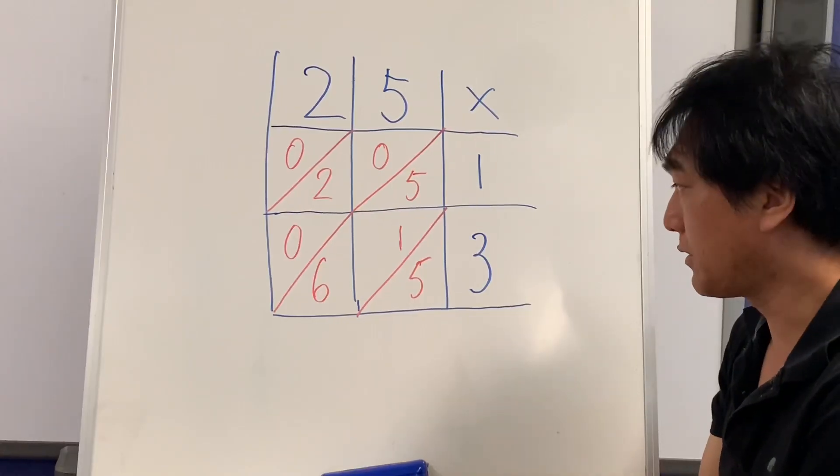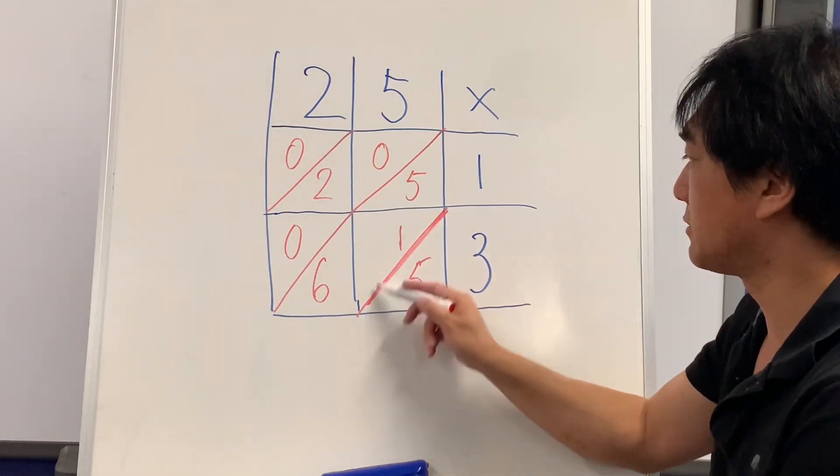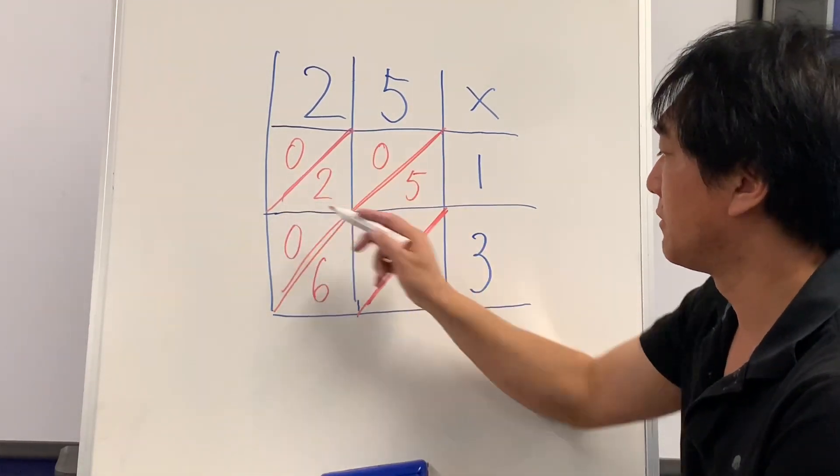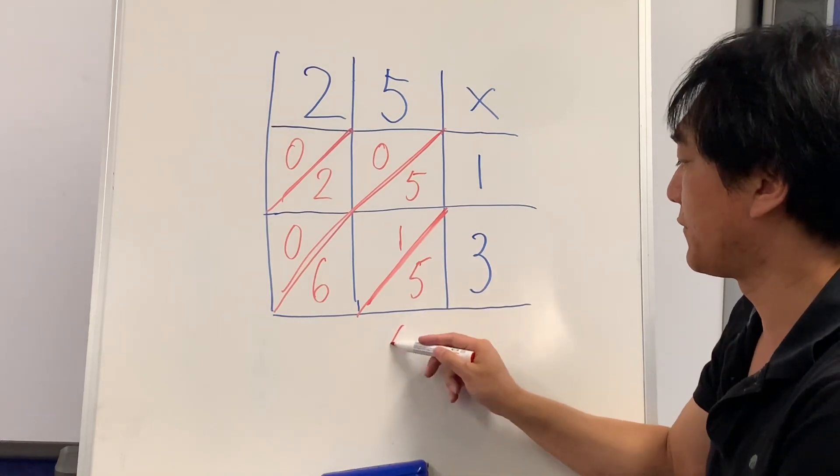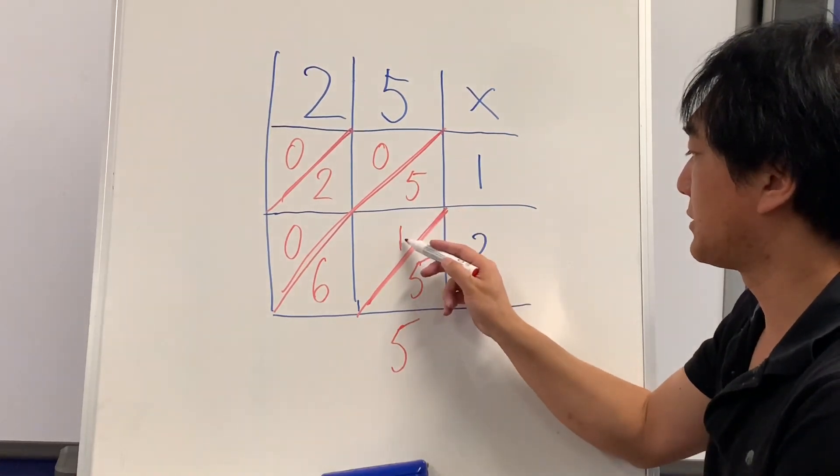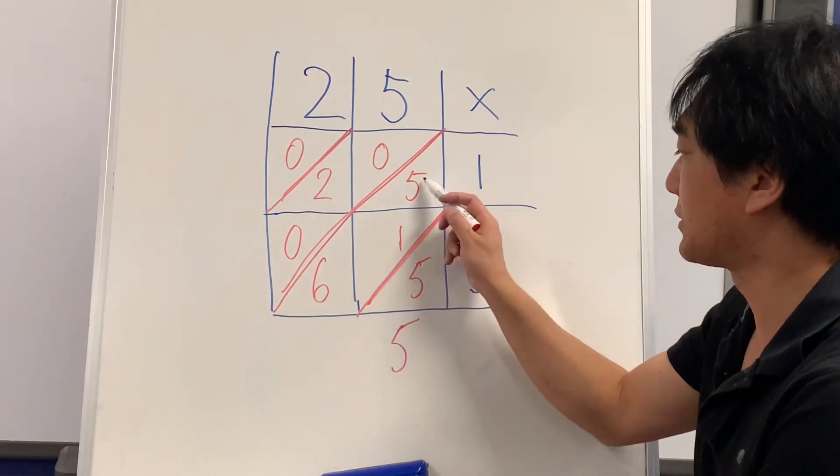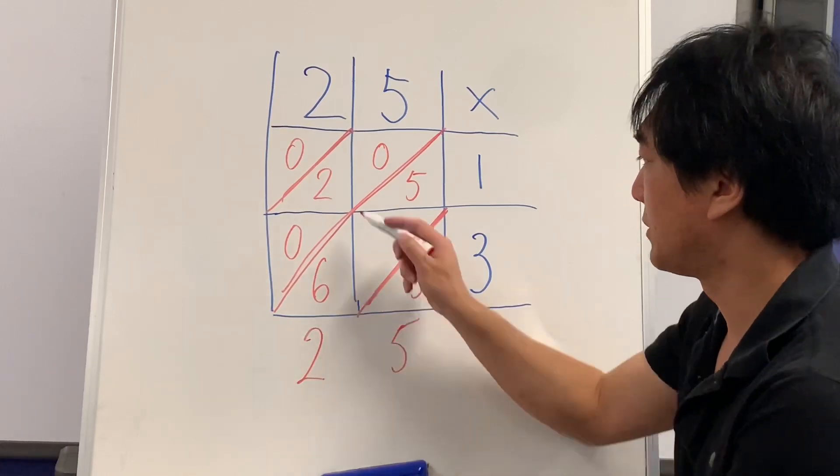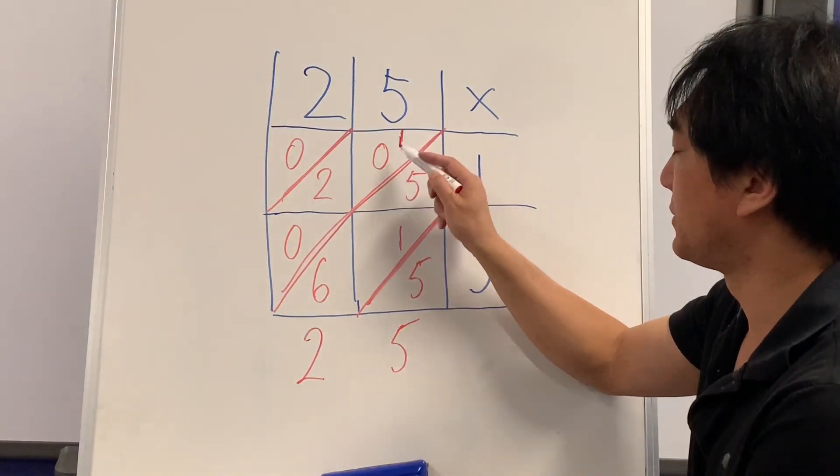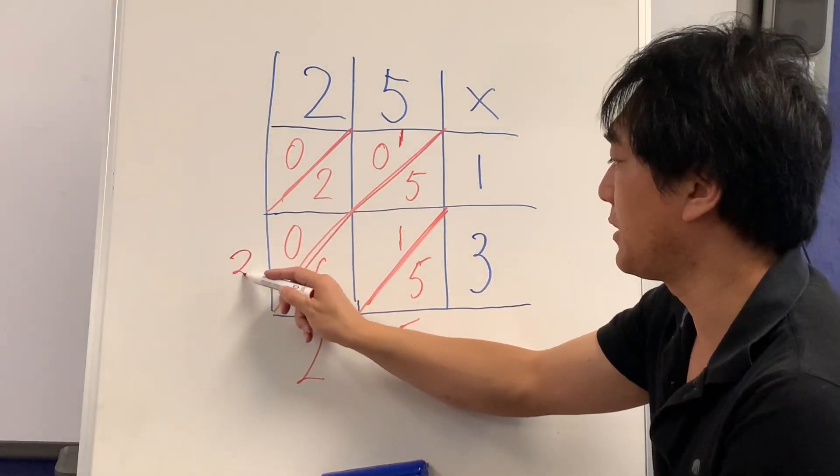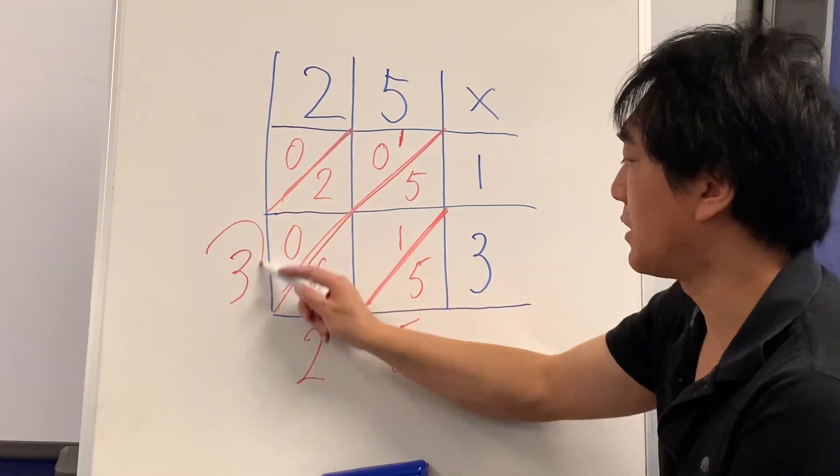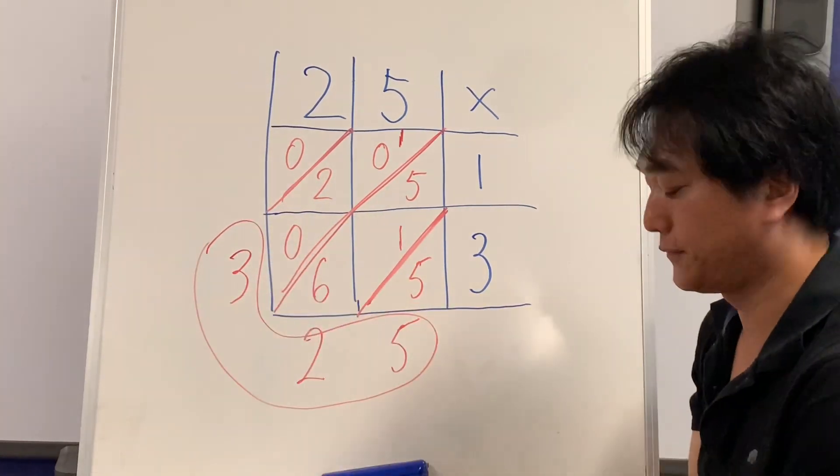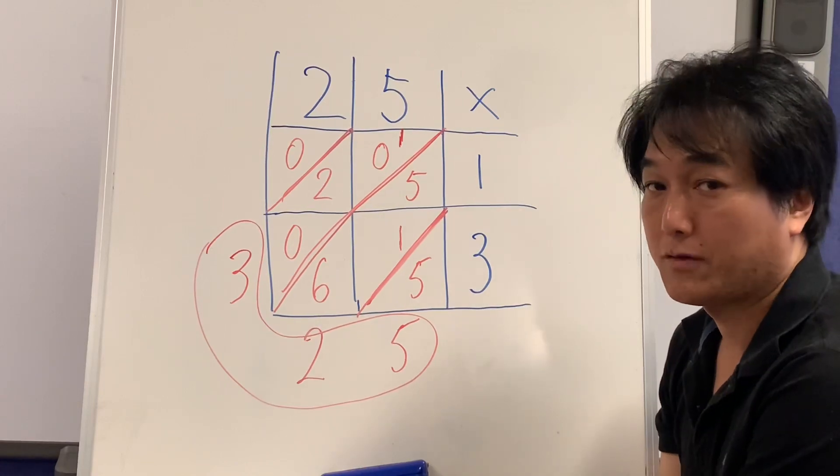What you have to do is using these diagonal lines, we're going to add these numbers. This is only 5. 5 plus 6 plus 1, so 6 plus 1 plus 5 is 12, so one goes to the next column. 1 plus 2 is 3, that's 0. So answer is 325.